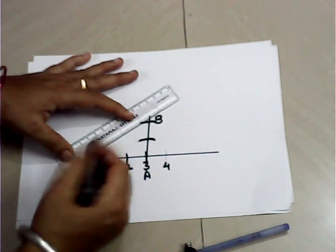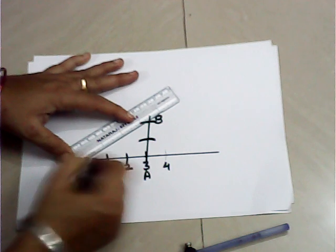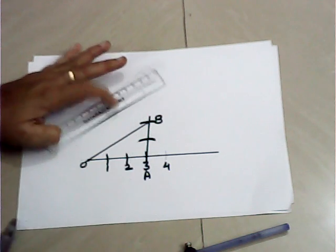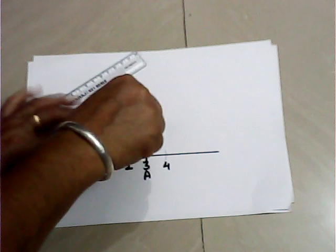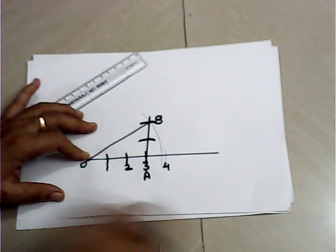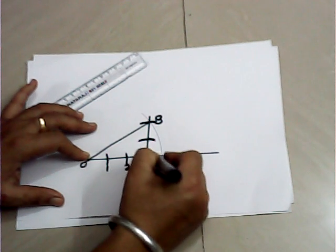Join OB with radius OB. Draw arc. This arc cuts the number line at point P.